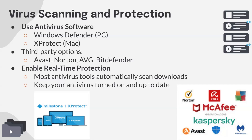Enable real-time protection — most antivirus tools will automatically scan downloads, so make sure that's turned on. On Mac, XProtect runs in the background automatically. On Windows, you can open Windows Defender and check the settings. Always keep your antivirus up to date. For built-in tools, this means keeping your operating system up to date — whenever you get notifications to update your system, do so as soon as you can.